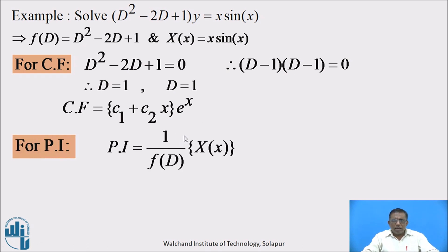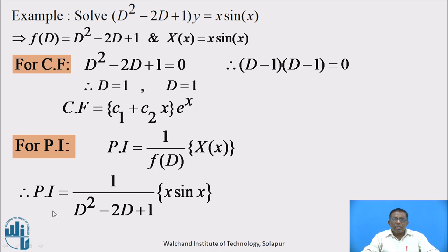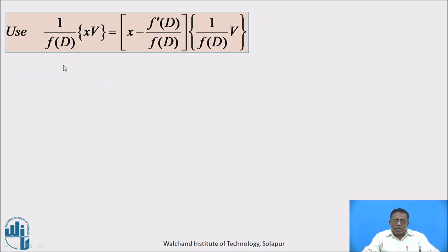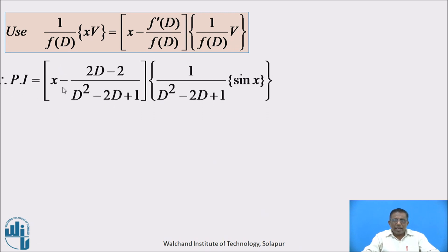For PI, formula: PI = 1/f(D) operated on X(x). Substituting: PI = 1/(D²-2D+1) operated on x·sin(x). To simplify, we use: 1/f(D) operated on x·v = [x - f'(D)/f(D)] times 1/f(D) operated on v. Here f'(D) is the derivative of D²-2D+1, which is 2D-2. So PI = [x - (2D-2)/(D²-2D+1)] times 1/(D²-2D+1) operated on sin(x).